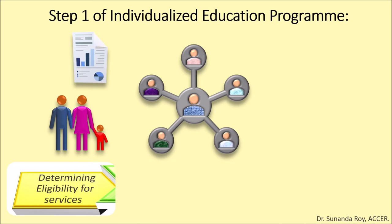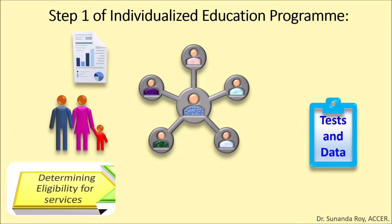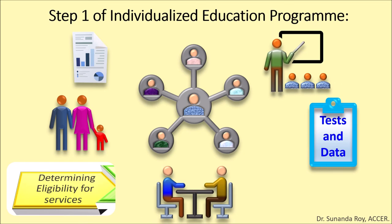Following testing and gathering of existing data, the evaluation team will meet again to discuss results. Any time decisions are made regarding evaluation, the parent is invited to participate. Each of the 13 categories of disability in IDEA has unique qualification requirements. Some diagnoses, like ADHD or Autism Spectrum Disorder, require medical professionals. The bottom line is that the student is selected only if the disability impacts their education and the student needs specially designed instruction.